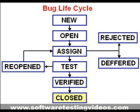Once the bug is fixed, it is tested by the tester. If the tester feels that the bug no longer exists in the software, he changes the status of the bug to closed. This state means that the bug is fixed, tested, and approved.